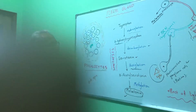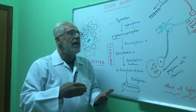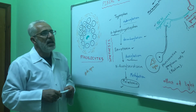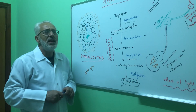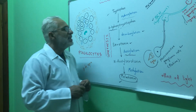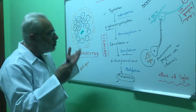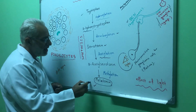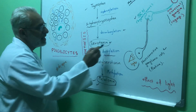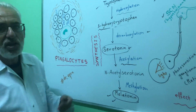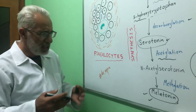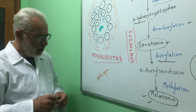Melatonin is also linked to what is known as seasonal depression or winter depression, in countries with long winters such as Sweden or Scandinavian countries. This is due to the fact that there is excessive melatonin release, which decreases serotonin release, because serotonin is converted into melatonin and therefore cannot function as a mood regulator.